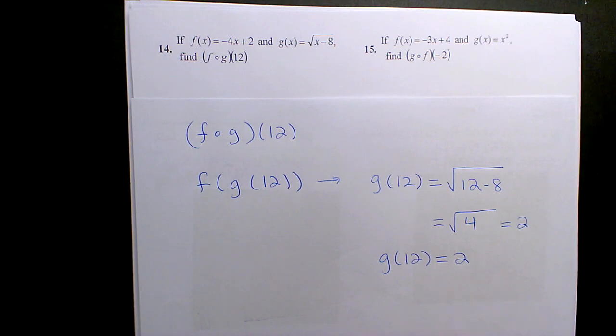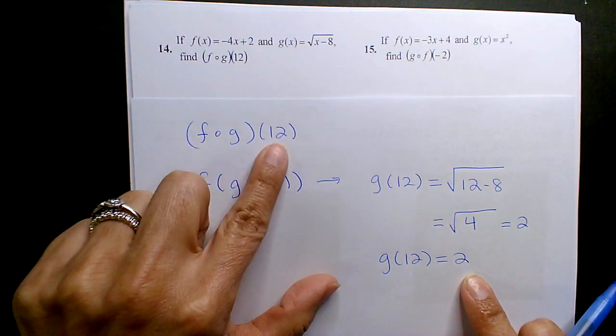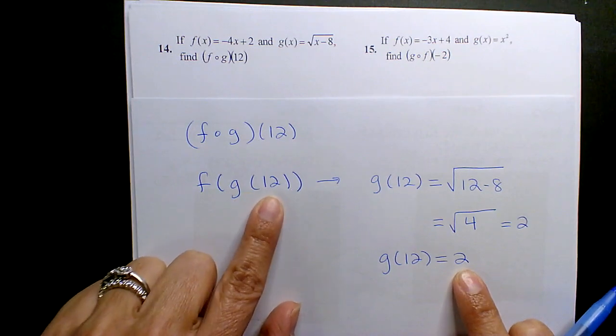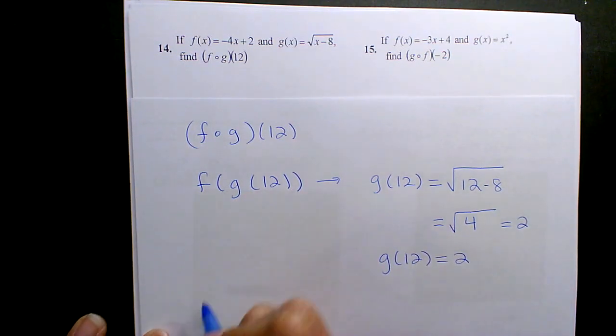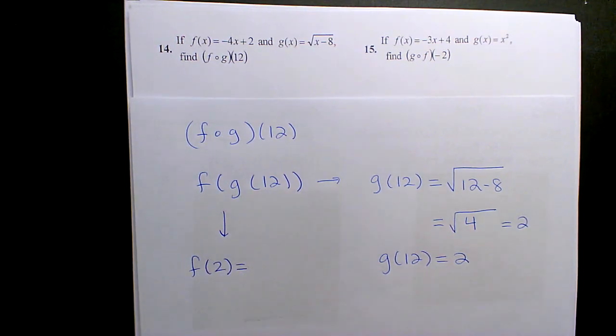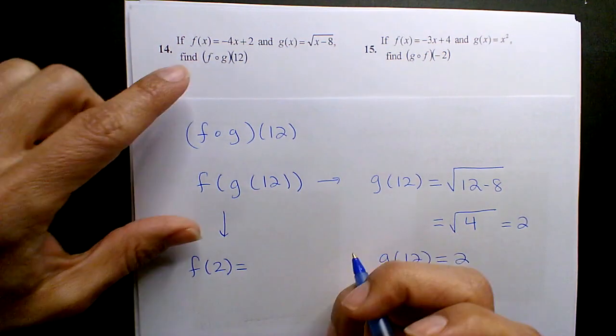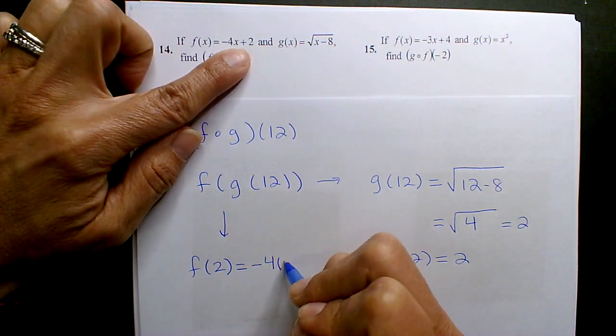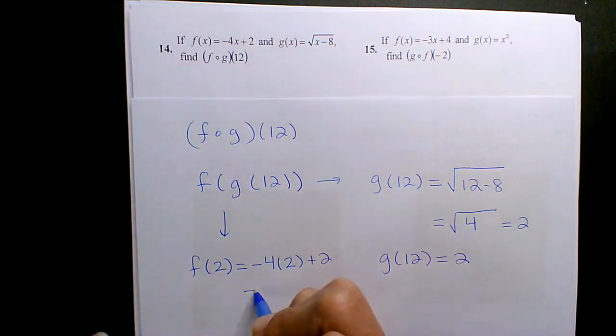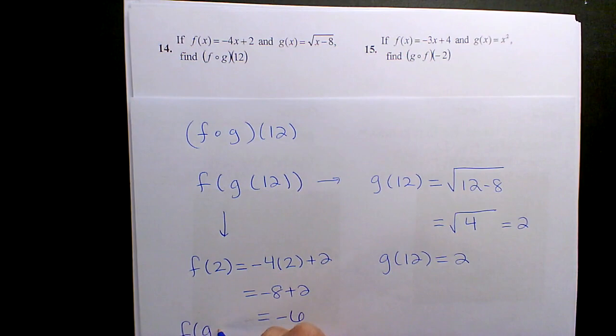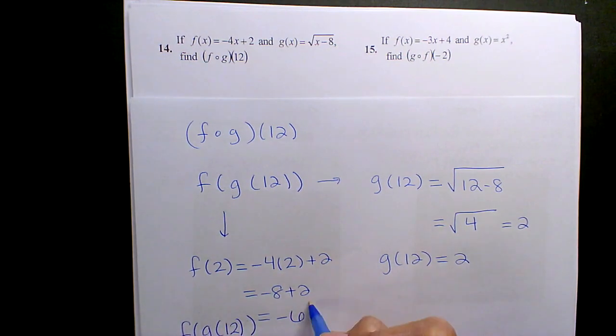So if I want F of G of 12, that G of 12 is equal to 2. So really, I'm asking you, give me F of 2. So now I'm going to throw in the 2 minus 4 times 2 plus 2, so I get negative 6. And so that is F of G of 12.